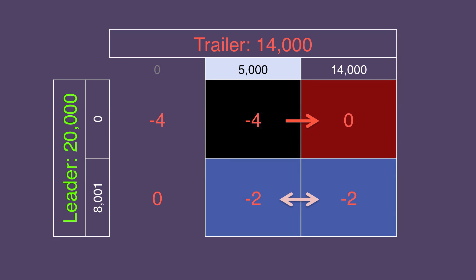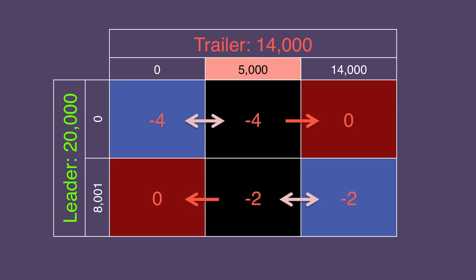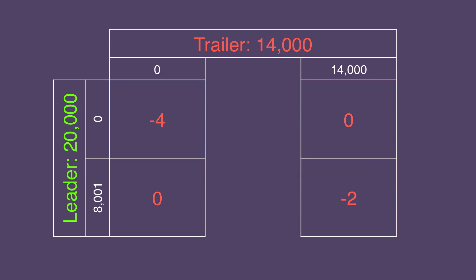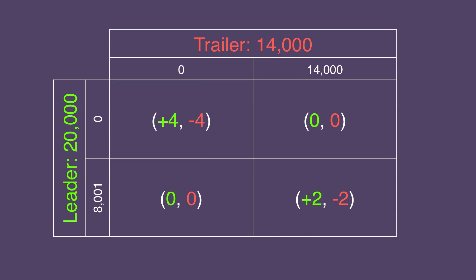The same is true in the other direction — 14,000 dominates 5,000. You should never do a strategy that's dominated by another, so 5,000 is not a viable wager here. We'll drop it from our matrix and close the door on it so it never comes up again.